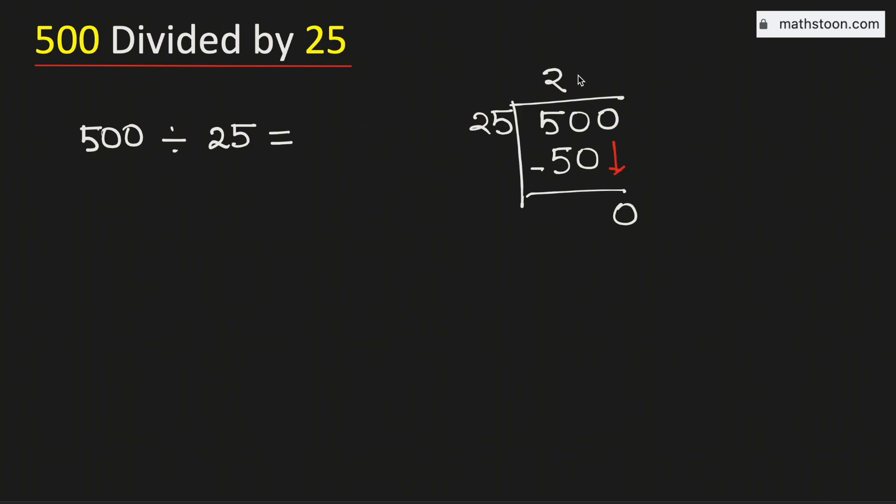Now 25 times 0 is 0, subtract we get 0. We have got the number 0, but in this case we have no number to bring down. That's why we will stop here.